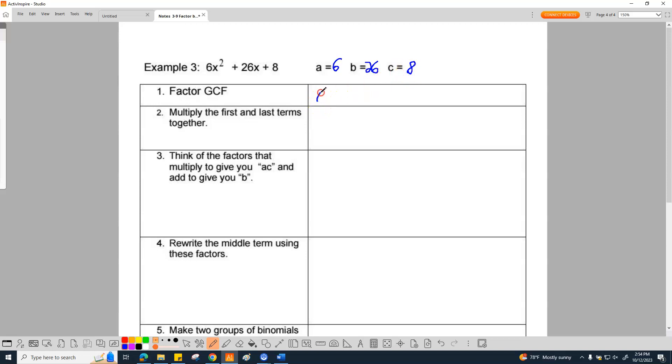Factor the GCF. There is no GCF in this problem. Don't be fooled by this. There will be problems that eventually have a GCF, and we'll talk about those later. Multiply the first terms and the last terms together. In this case, that's 6 and 8. 6 times 8 is 48.